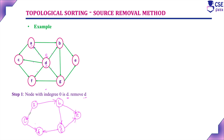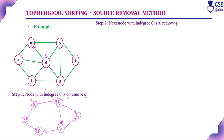Next step: in this resultant graph, again find the next vertex with in-degree 0. Vertex A has no in-degree, so in-degree is 0. Vertex B has in-degree 1, C has in-degree 1, F has in-degree 2, G has in-degree 1, and E also has in-degree. So the next node with in-degree 0 is vertex A. Remove A from the graph.